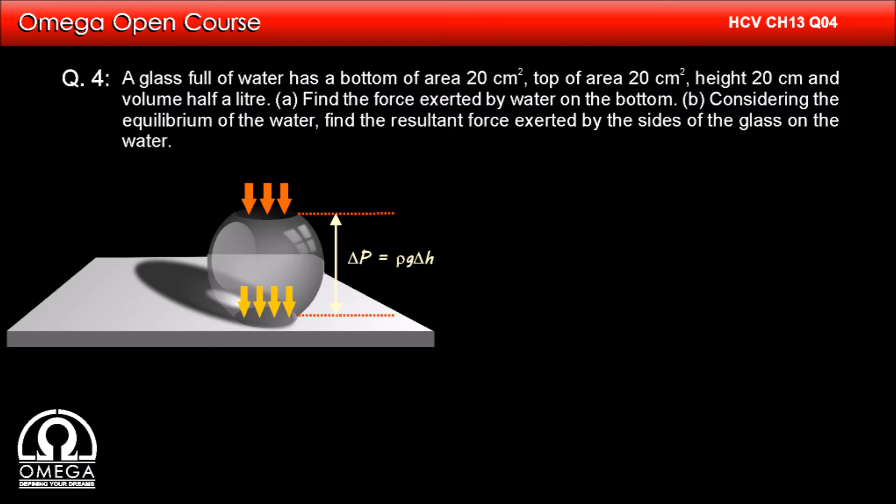Therefore, force at the bottom by water is this pressure into area, that is equal to (P₀ + ρgΔh) × A. Putting the value of atmospheric pressure as 10⁵ Pascals, density of water is 1000 kg per meter cube, acceleration due to gravity as 10 meter per second square.